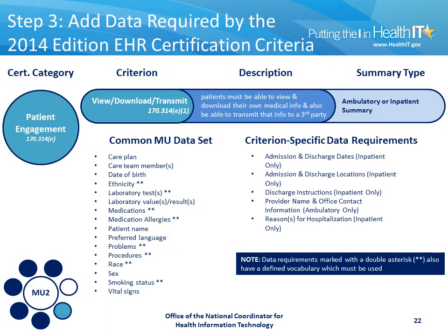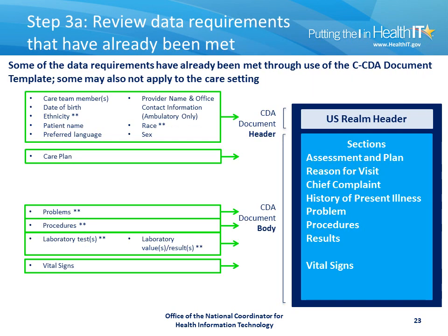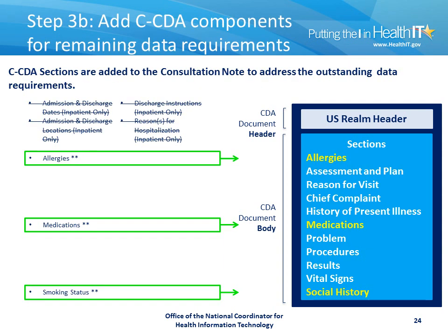The last step in the process is to review the certification criterion and the data requirements that it includes. For the View, Download, and Transmit criterion, we're working with the common MU data set, as well as several criterion-specific data requirements. In reviewing the document we've built so far, we note that many of the data requirements have already been addressed. Since we're working in an ambulatory environment, all data requirements specific to an inpatient environment do not apply. The only remaining data requirements are allergies, medications, and smoking status, and for each, we review the Consolidated CDA Implementation Guide and choose the appropriate corresponding section to include in the document.